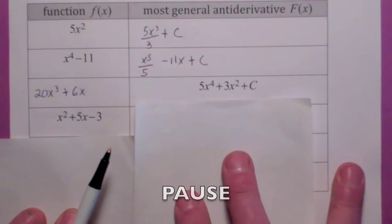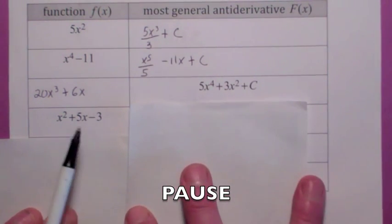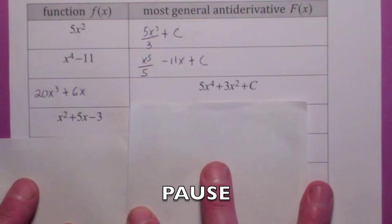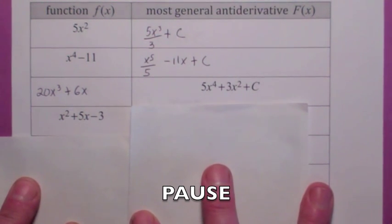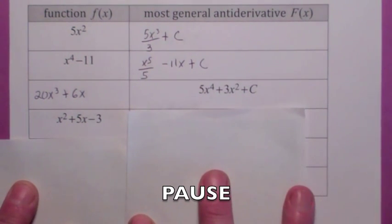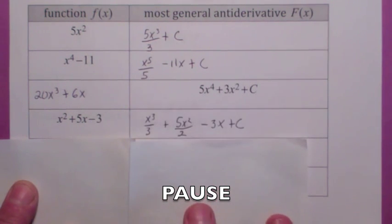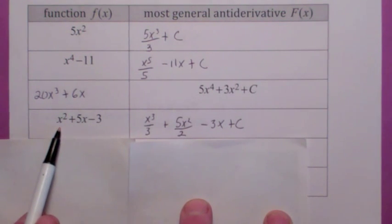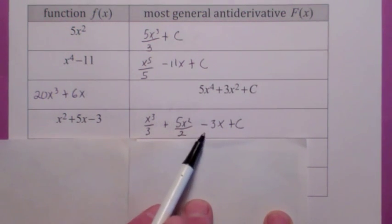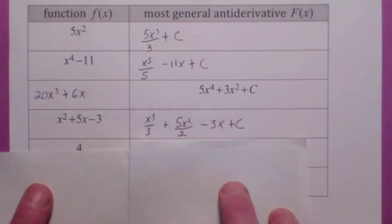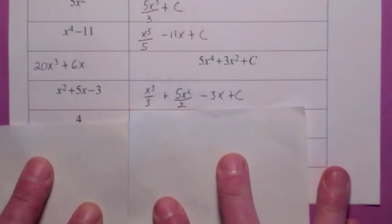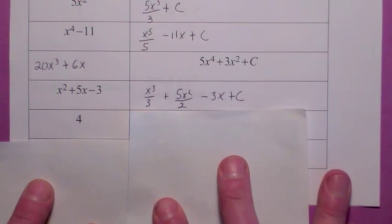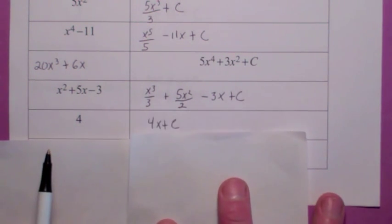Try this one — see if you can tell me what the most general antiderivative is of x squared plus 5x minus 3. Hit the pause button. You should have gotten x to the 3rd over 3 — add 1 to the exponent, divide by the new exponent — plus 5x squared over 2, minus 3x, plus C. What's the most general antiderivative of 4? I'm looking for a function whose derivative is 4. It would be 4x plus C, where C is any real number.